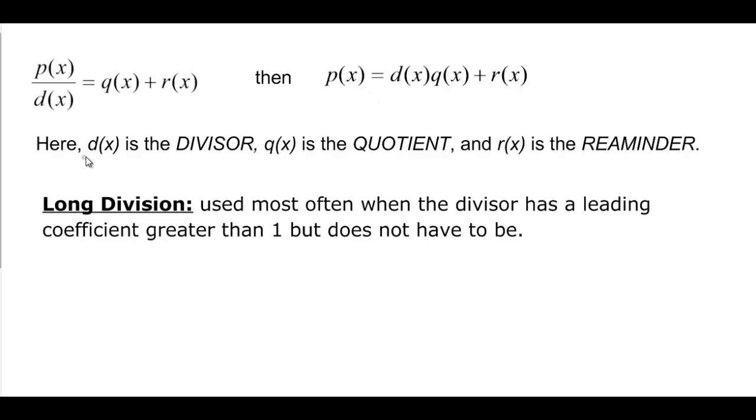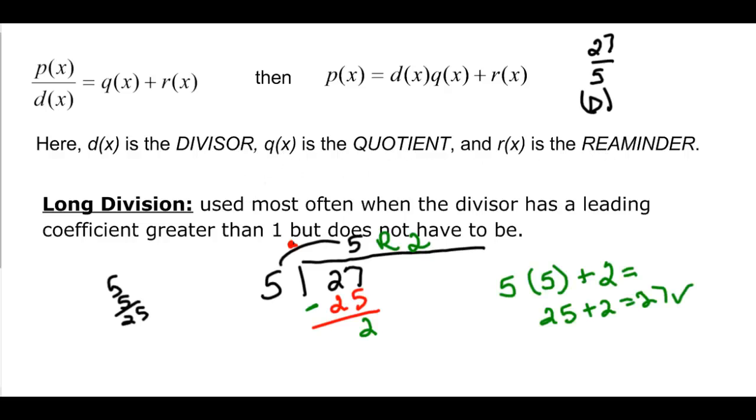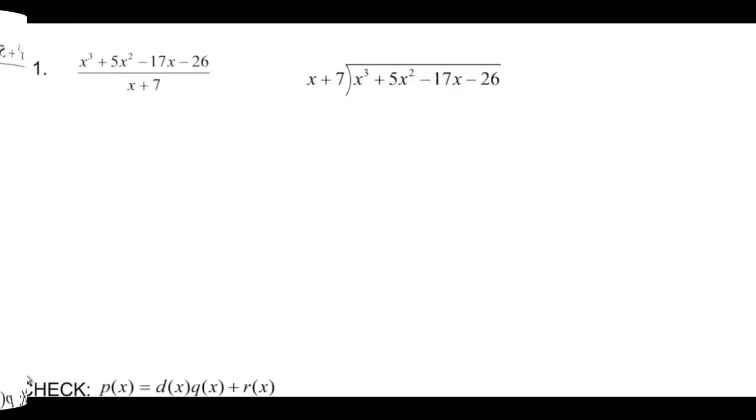We're going to check a couple of those. So in this case, D of X again is the divisor, Q of X is the quotient and R of X is the remainder. So how does that look in polynomial form? Well, I've already set it up out here for you, but remember the bottom goes on the outside, the top goes on the inside. Remember this is D of X and this is P of X.